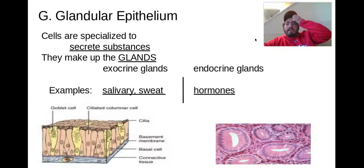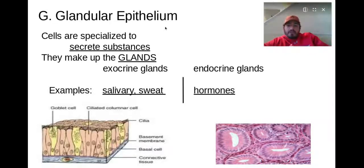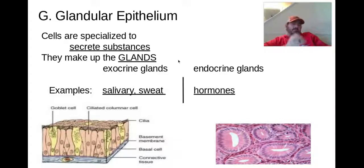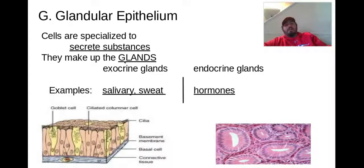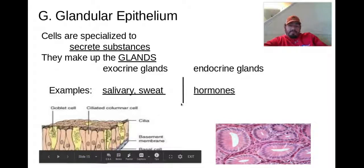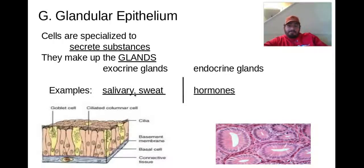Then we have glandular epithelium. We said epithelial cells also make up our glands. These are specialized epithelial cells that secrete substances and make up our glands. We have two types of glands — exocrine and endocrine. Some of the things expelled include saliva, sweat, and hormones. These all come from different types of glandular epithelial cells.